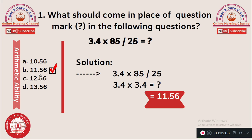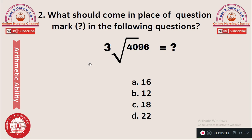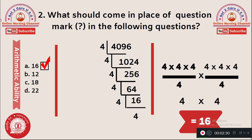Second question: which number comes in place of the question mark? Cube root of 4096. Options: A) 16, B) 12, C) 18, D) 22. To find the cube root, divide 4096 by 4 repeatedly: 4096 ÷ 4 = 1024, ÷ 4 = 256, ÷ 4 = 64, ÷ 4 = 16. So there are six 4s total, giving us 4 × 4 × 4 over 4 × 4 × 4, and the common factor gives 4 × 4 = 16.